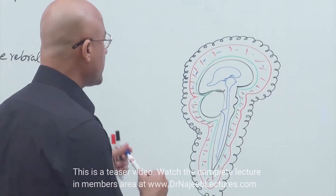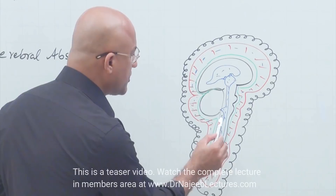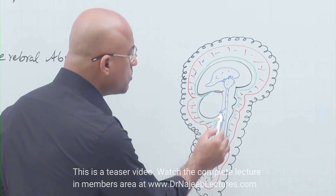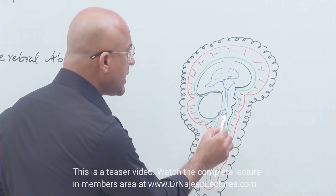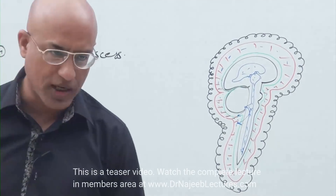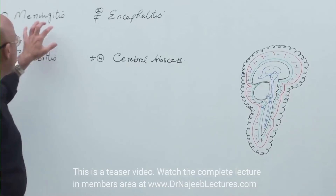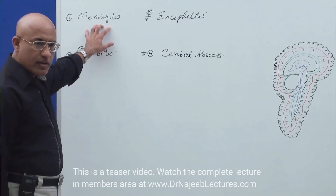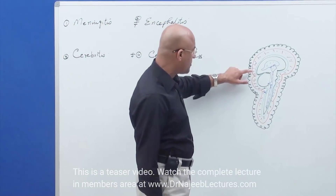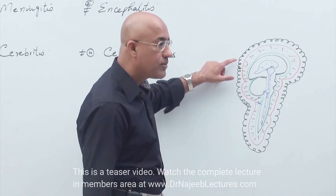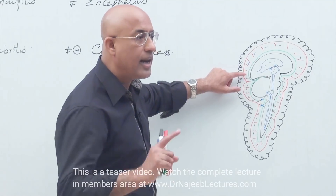Cerebrospinal fluid is present in the ventricular system within the central nervous system and also moves out through a median foramen called the foramen of Magendie, and two lateral foramina called the foramina of Luschka. Now, if we really properly define meningitis, when we talk about meningitis, we are talking about inflammation of the leptomeninges — not inflammation of the durameter. So we can say meningitis means leptomeningitis.